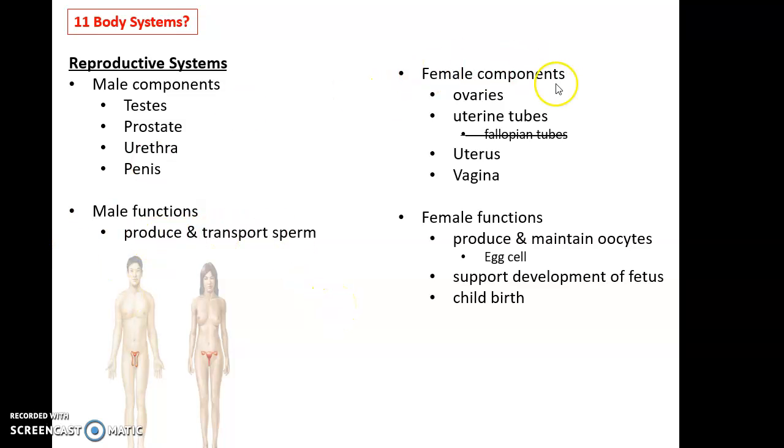Then we have the female reproductive system. The female reproductive system includes such structures as the ovaries, the uterine tubes, the uterus, vagina, and vulva. It's worth noting here that the uterine tubes used to be called fallopian tubes. Not anymore. Do not use that term. It is uterine tubes, tubes attaching to the uterus.